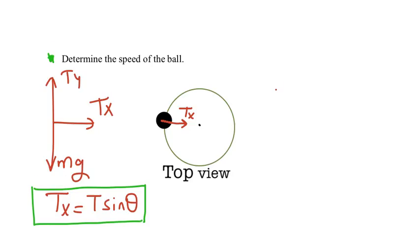For this section, we are going to determine the speed of the ball. And from the previous question, we saw that Ty cancels Mg out. The only force left for the net force was Tx.